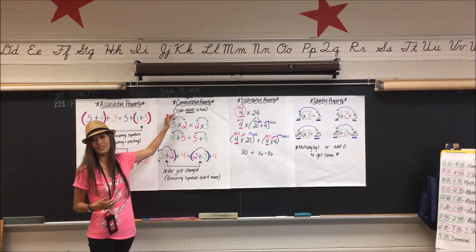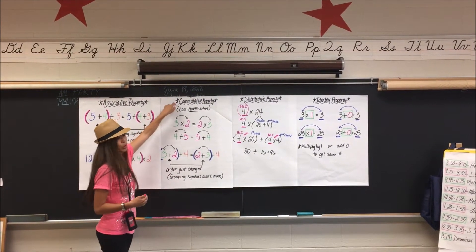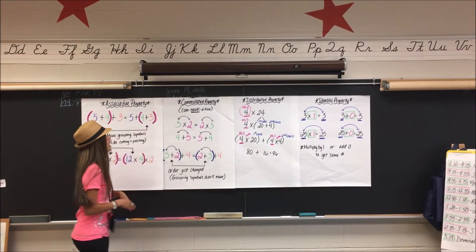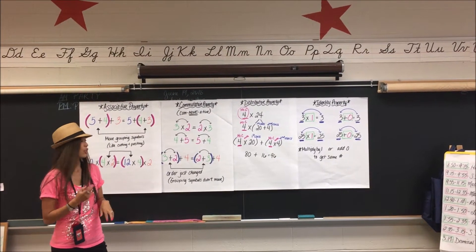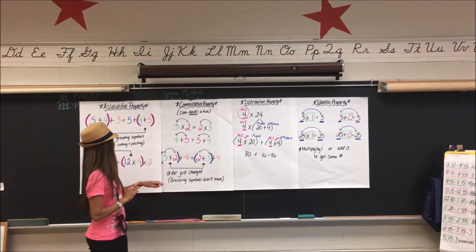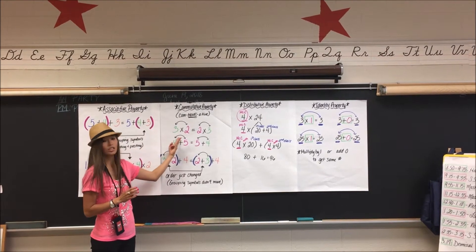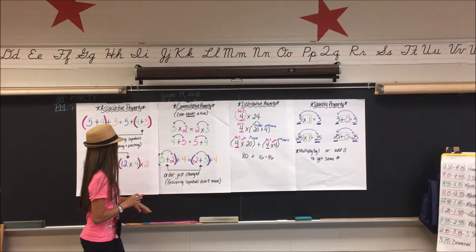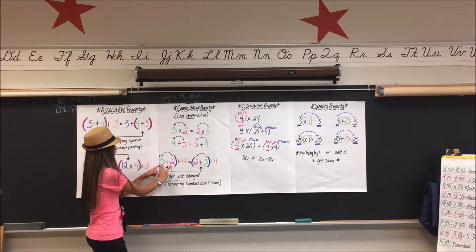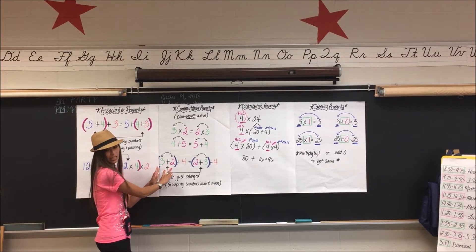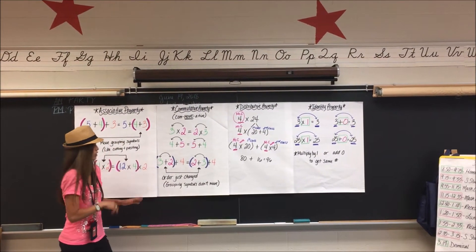Next we have the commutative property. What's changing there? The order. The numbers are just switching. Very good. You can see here we have grouping symbols. The only thing that changed there is the order — you're flipping the numbers.